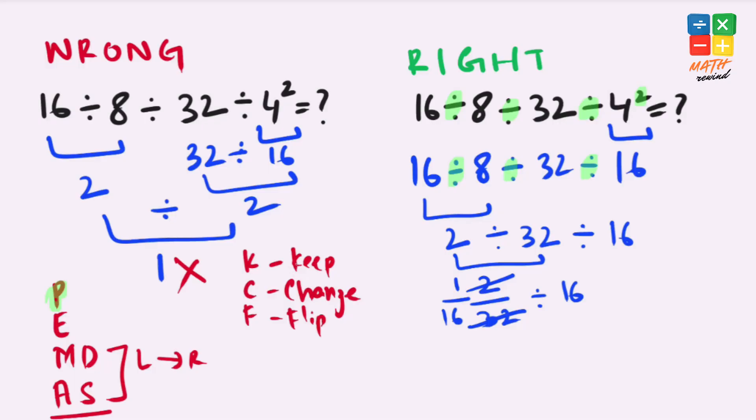To simplify this further we can use KCF rule: keep, change, and flip. Keep means we keep 1 over 16 as it is. Change means we change the divided sign to multiplication, and flip means we flip this 16 over 1 as 1 over 16. When we simplify this we get 1 over 16 times 16 equals 256, which is the right answer to this question.